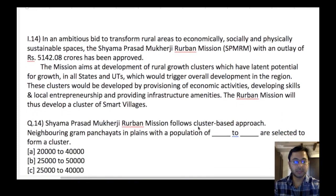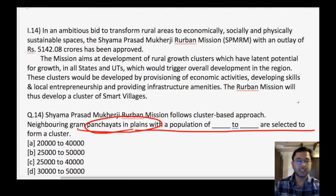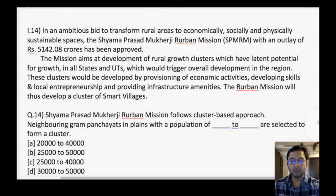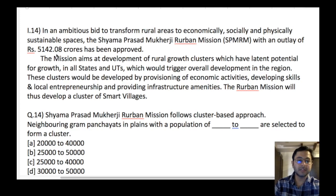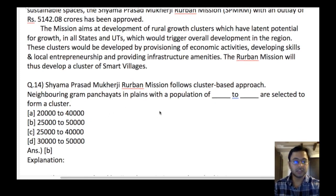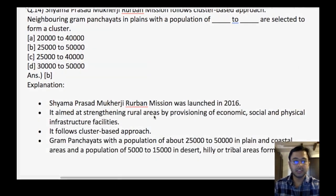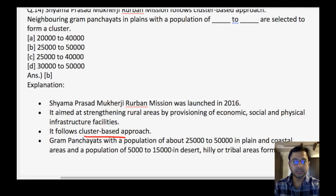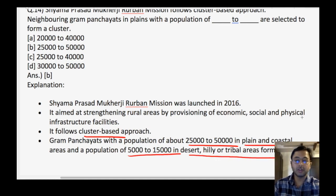Next question on Shyama Prasad Mukherjee Rurban Mission, which follows a cluster-based approach. Neighbouring Gram Panchayats in plains with a population of dash to dash are selected to form a cluster. The outlay is ₹5142 crore — remember that. The answer is B — 25,000 to 50,000 population. It was launched in 2016, aimed at strengthening rural areas by provisioning of economic, social, and physical infrastructure. Cluster-based approach: population 25,000 to 50,000 in plain and coastal areas; 5,000 to 15,000 in desert, hilly, or tribal areas. These provisions are very important from the examination point of view.